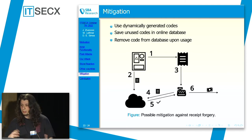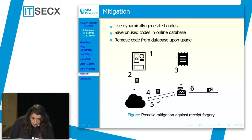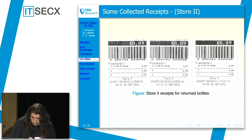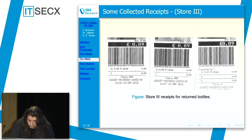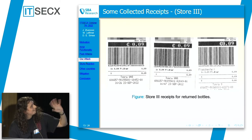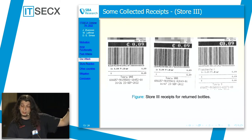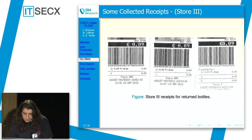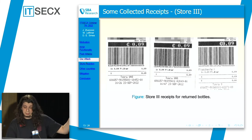Also important is to create dynamic receipts. For example, going back to the receipts from store one and three — we didn't try to exploit them because we thought they would probably be secure, since you can see the receipt number is part of the barcode. So this is the dynamic part, and it could mean it is actually stored in a centralized database and validated.